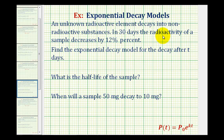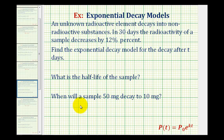An unknown radioactive element decays into non-radioactive substances. In 30 days the radioactivity of a sample decreases by 12%. We want to find the exponential decay model for the decay after t days, determine the half-life of the sample, and find when a sample of 50 milligrams will decay to 10 milligrams.